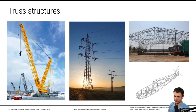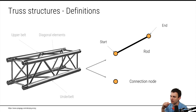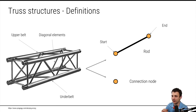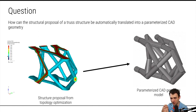Now let's come to truss structures. Truss structures can be found anywhere in engineering design: power lines, buildings, gliders. Truss structures are pretty lightweight because you put trusses only where you want loads transferred — it's a lightweight structure. To have some definitions: you have a start and end of a rod, connection nodes where different rods join together, and elements like underbelts, upperbelts, and diagonal elements. The key question is: how can the structural proposal of a truss structure be automatically translated into a parametrized CAD geometry?